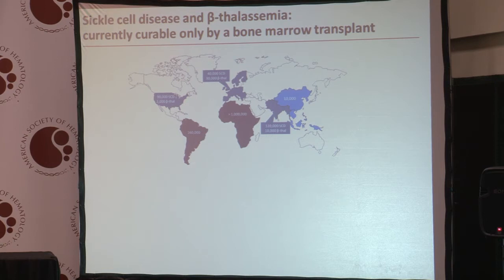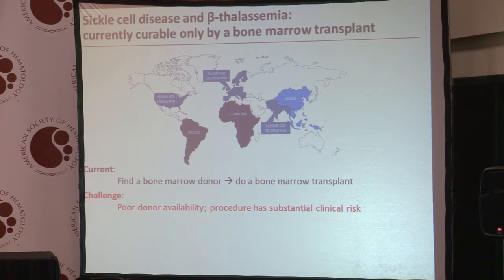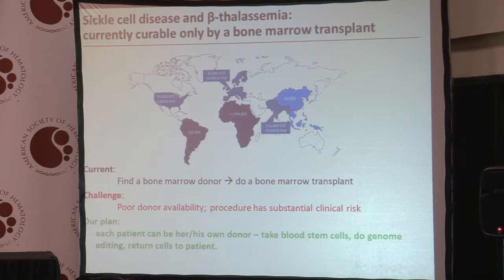Right now, there is a cure. It's called a bone marrow transplant. The way you do that is you take one of these millions of patients, and you find a bone marrow donor, and then you do the transplant. It sounds very easy, but finding a donor can be quite hard, and in many cases impossible, and the bone marrow transplantation procedure has substantial clinical risk.